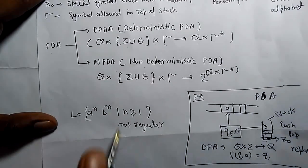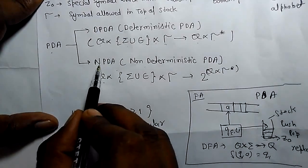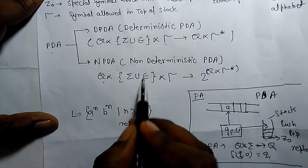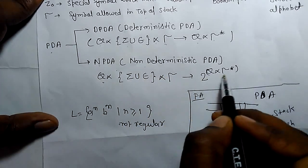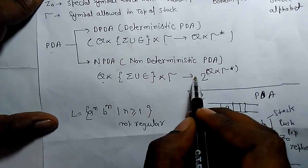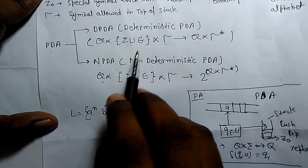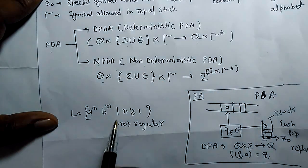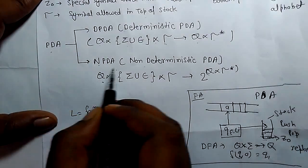For NPDA, the state combines with the input symbol and the top of the stack to reach a set in 2^(Q cross Tau star). This is a non-deterministic pushdown automata. For a deterministic pushdown automata the transition leads to a single state. The most important thing is that the majority of pushdown automata studied are non-deterministic.